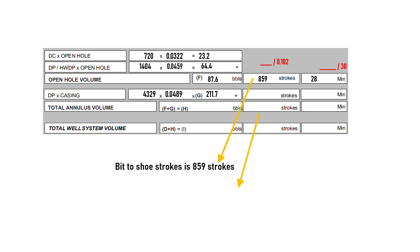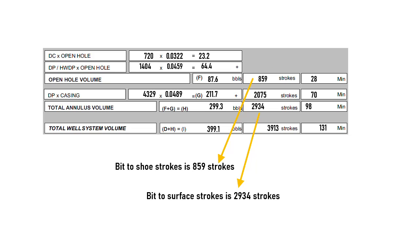Bit-to-surface stroke is total annulus volume divided by pump displacement, and we get 2934 strokes. So theoretically, after pumping 859 strokes, the influx will be above the shoe. And after pumping 2934 strokes, the influx will be out of the annulus.